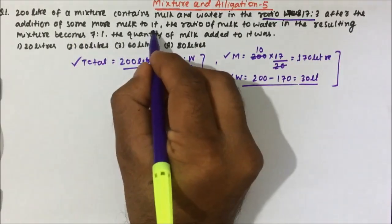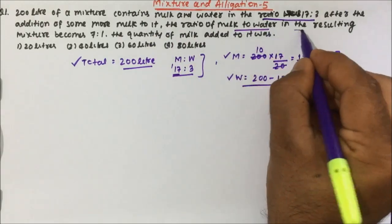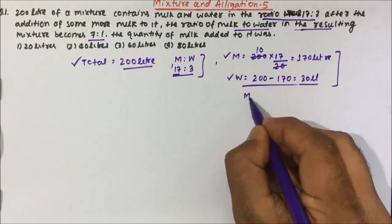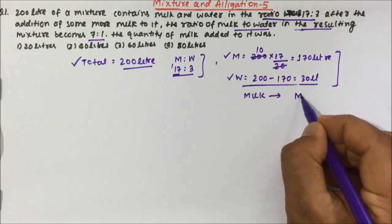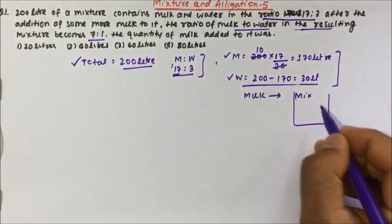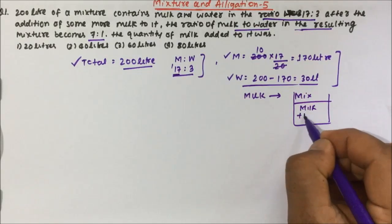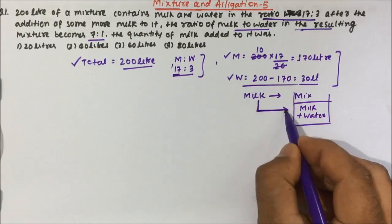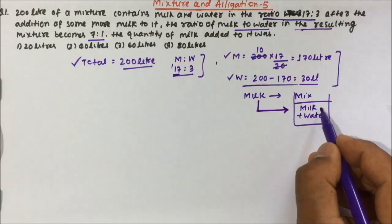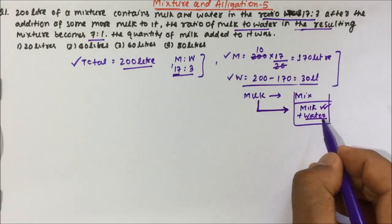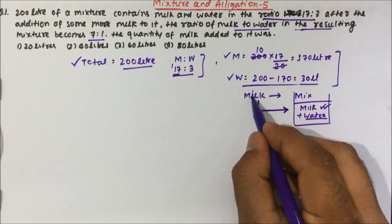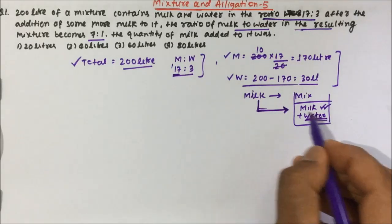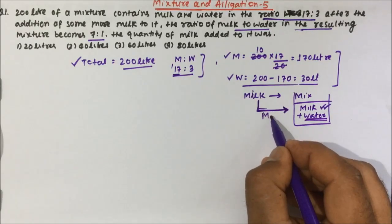After the addition of some more milk to it, the ratio of milk to water in the resulting mixture becomes 7 is to 1. So what we are going to do is add milk to the mixture. The mixture is having milk and water, and we are going to add some more milk. If you add some more milk, then the quantity of milk will increase, not the water. Suppose we are adding m liters of milk.